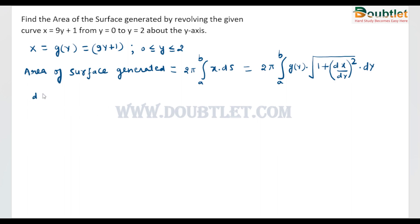Now first we have to differentiate x with respect to y, then what we will get is 9. Then we can write this whole term as the square root of 1 plus 9 squared, which becomes root 82.